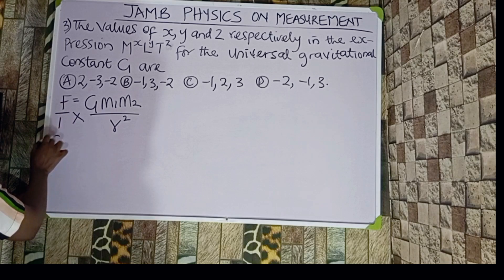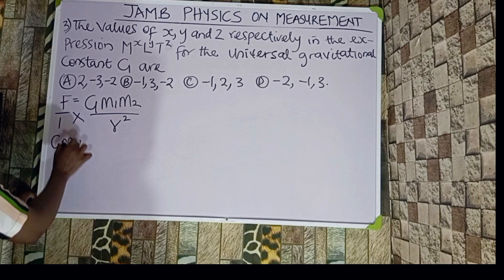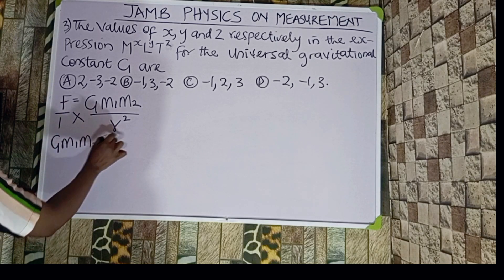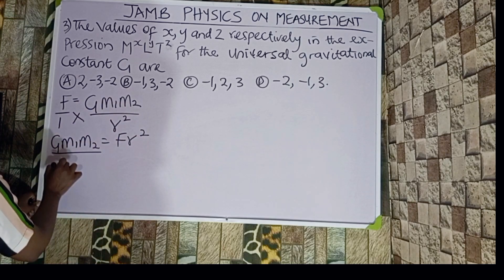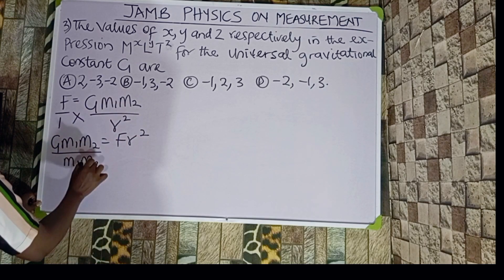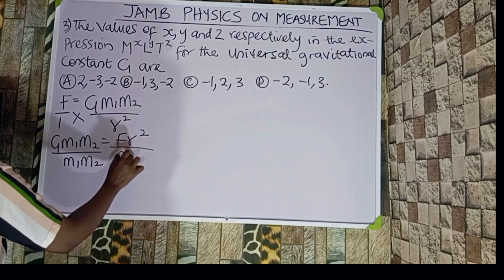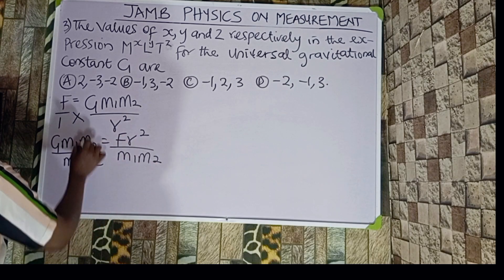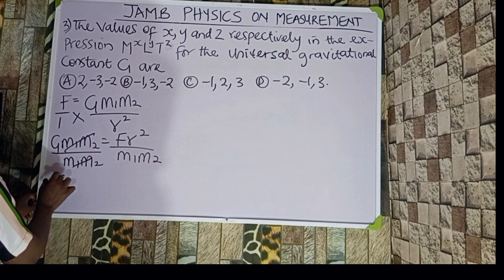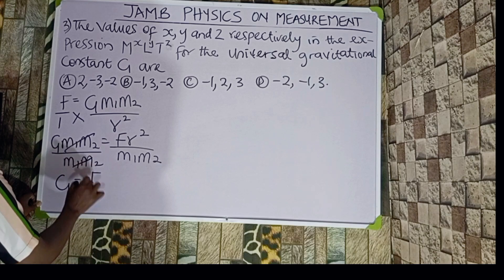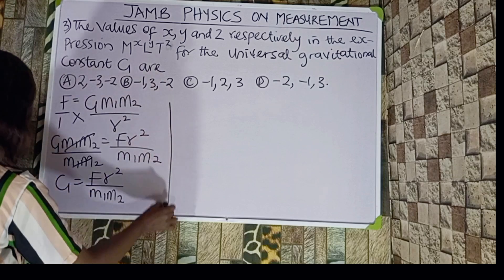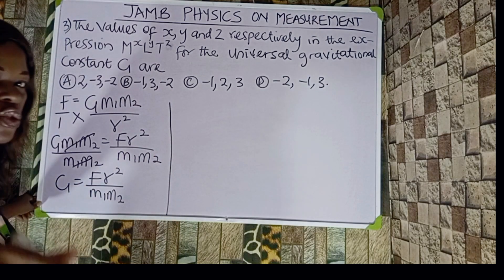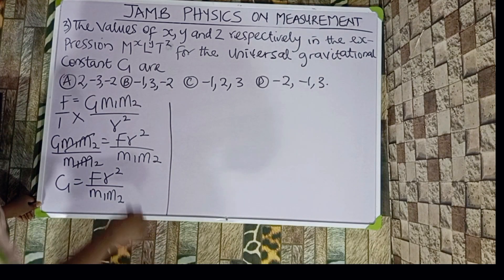To make G the subject, we cross multiply: G·m₁·m₂ equals F·r². Dividing both sides by m₁·m₂ gives G equals F·r² over m₁·m₂. The next step is to find the units of G.